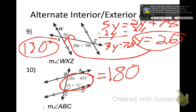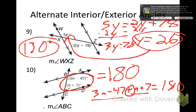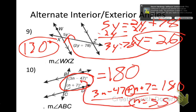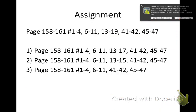Number 10 is same side interior, so it adds up to equal 180. I write: 3N − 47 + N + 7 = 180. Combining and solving gives N = 55. Plugging N back in gives a missing angle of 118 degrees. And if that one is 118°, what's the other angle have to be? 62 degrees — because those two are supplementary.